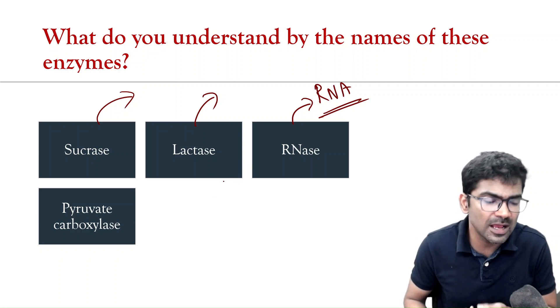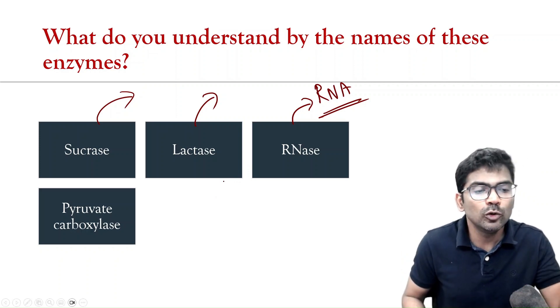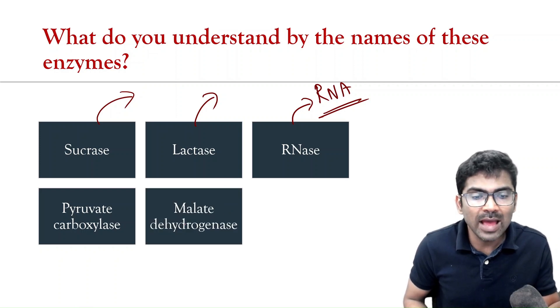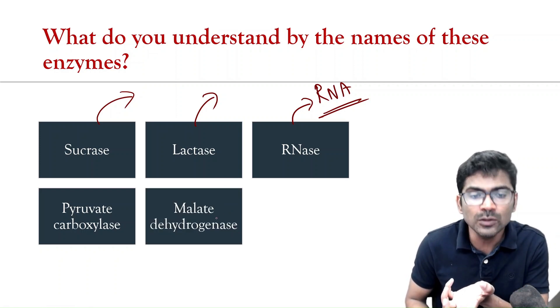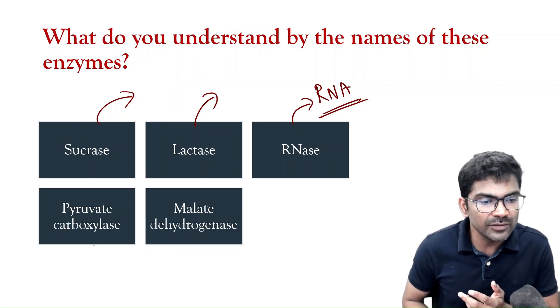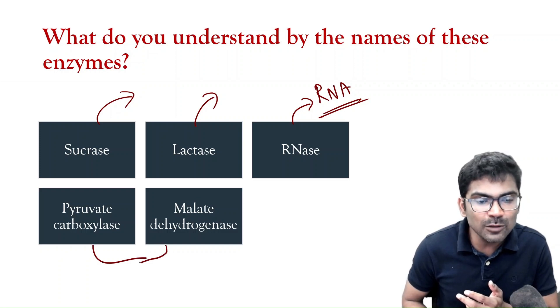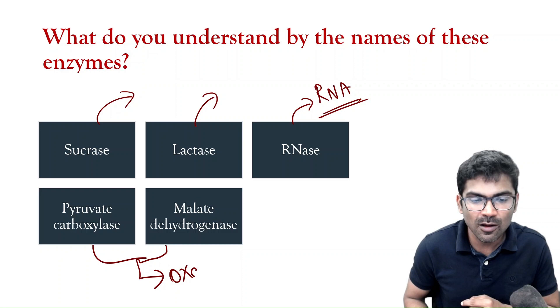Pyruvate carboxylase, as the name suggests, it is going to add carbon dioxide to pyruvate. Malate dehydrogenase, it is going to remove electrons from malate. What is the product? For both pyruvate carboxylase and malate dehydrogenase, the product is same, that is your oxaloacetate.